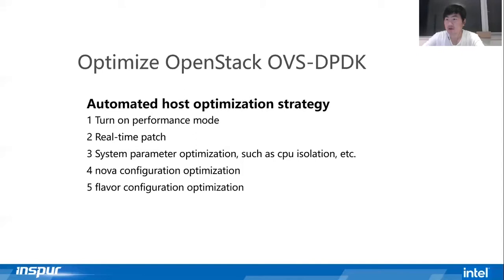Fourth, Nova configuration optimization — mainly optimizing CPU mode, host network card ring buffer, and CPU pinning list. Fifth, flavor optimizations — mainly parameter tuning for creating virtual machine binding strings, including huge pages, network card, and multi-queue settings.